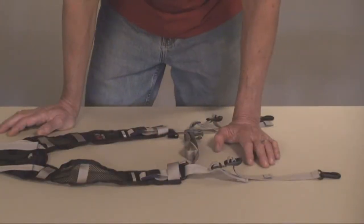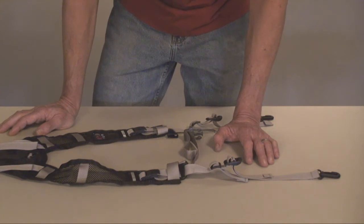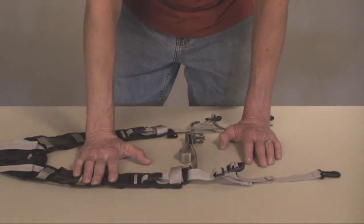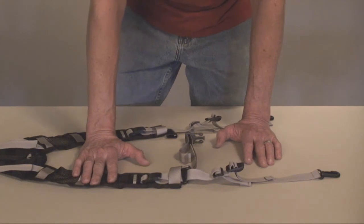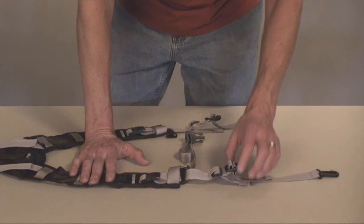This is the feature of the harness that's unique. It's called the dual adjust system. Essentially what it does is it allows us to make one harness size that will fit any torso height, any person from about five foot four to six foot five.